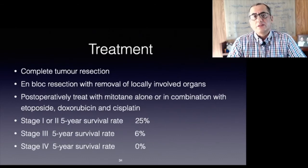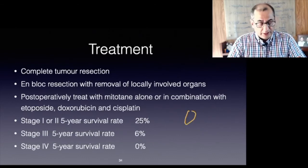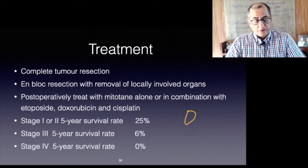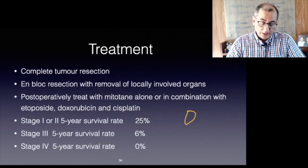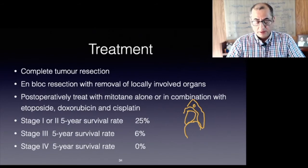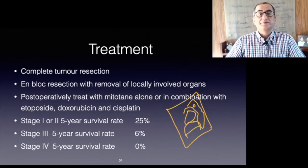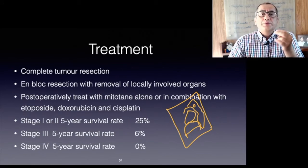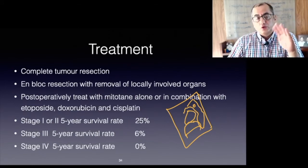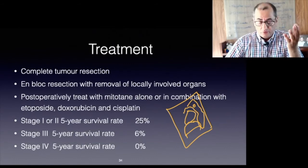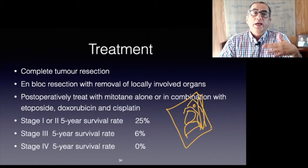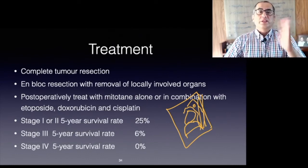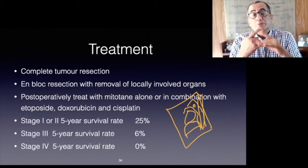En-bloc resection with removal of locally involved organs is often required. In cases of tumor thrombus in the vena cava, assistance of a cardiac surgeon is sometimes needed. Laparoscopic resection of adrenocortical carcinoma is associated with a high incidence of local recurrence and cannot be recommended. Tumor debulking plays a role in functioning tumors to control hormone excess — for example, if the tumor involves the inferior vena cava and cannot be fully removed.